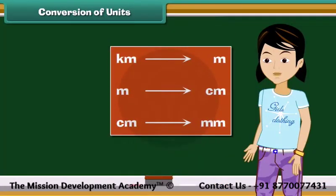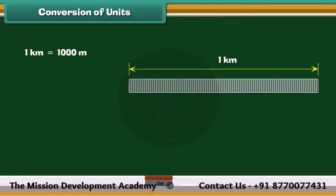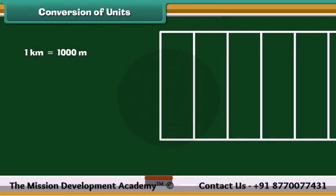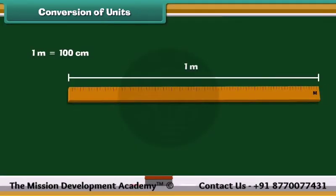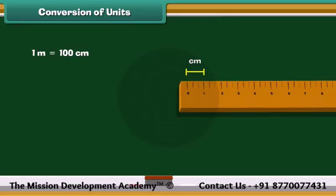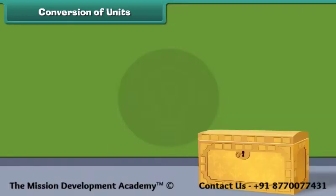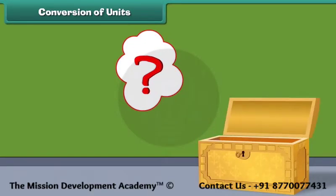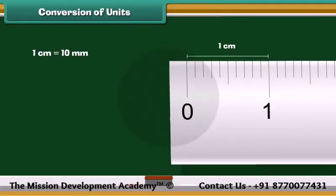Among these, kilometer is the biggest unit used for measuring long distances, while millimeter is the smallest unit used for measuring very small lengths. The standard unit of distance is meters. To measure distances smaller than a kilometer, 1 kilometer is divided into 1000 equal parts, and each part is called a meter. Thus, 1 kilometer equals 1000 meters. Similarly, 1 meter is divided into 100 equal parts, and each part is called a centimeter. Thus, 1 meter equals 100 centimeters. When 1 centimeter is divided into 10 equal parts, each part is called a millimeter. This means 1 centimeter is equal to 10 millimeters.